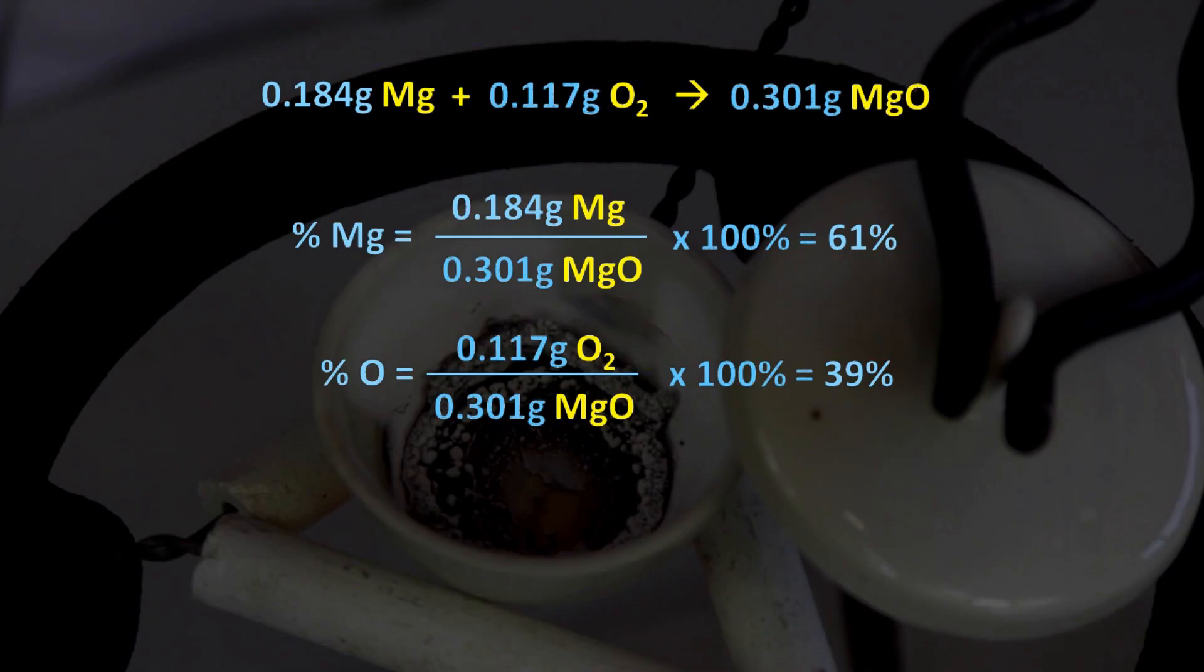In fact, if I had done my experiment even more accurately, I should have found it to be 60.3% magnesium and 39.7% oxygen.